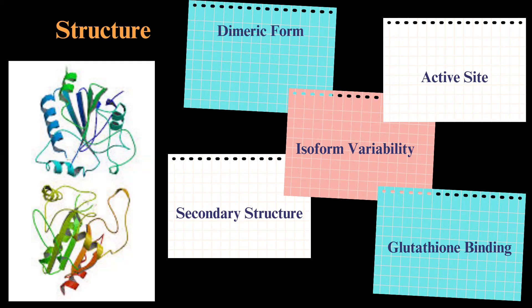There are specific sites for binding glutathione, essential for its antioxidant activity. Regarding isoform variability, different isoforms such as glutathione peroxidase type 1 and type 4 have slight variations in structure and function, influencing their role in various tissues.